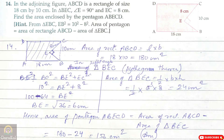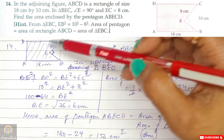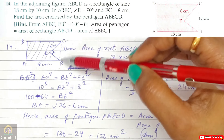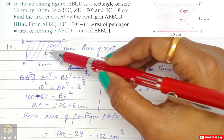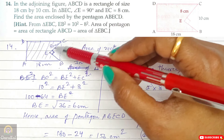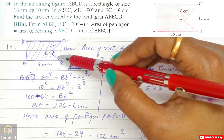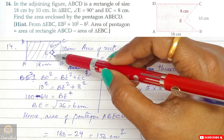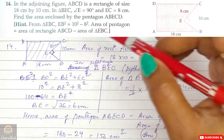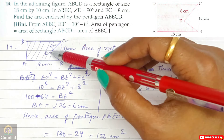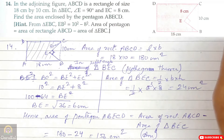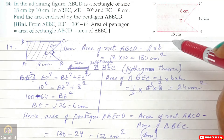Question number 14: ABCD is a rectangle of size 18 × 10 cm. A formation creates right angle triangle BEC inside it, and we need to find the area of the remaining shaded region — pentagon ABECD. In triangle BEC, angle E is 90 degrees and EC is 8 cm. The height is known but the base BE is missing.